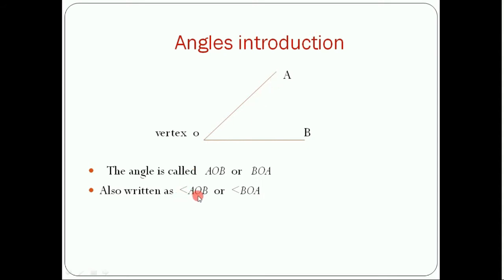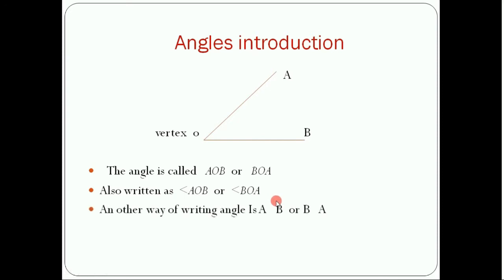The middle letter is basically where the angle is formed. Here the angle is formed at O, so O is the middle value. Another way of writing the angle is AOB or BOA — where the angle is formed, we put the vertex letter in the middle.